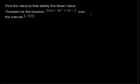In this video, I'm going to talk about the mean value theorem for derivatives and apply it to this problem: find the value or values that satisfy the mean value theorem for the function f(x) = 3x² + 5x - 2 over the interval [-3, 0].